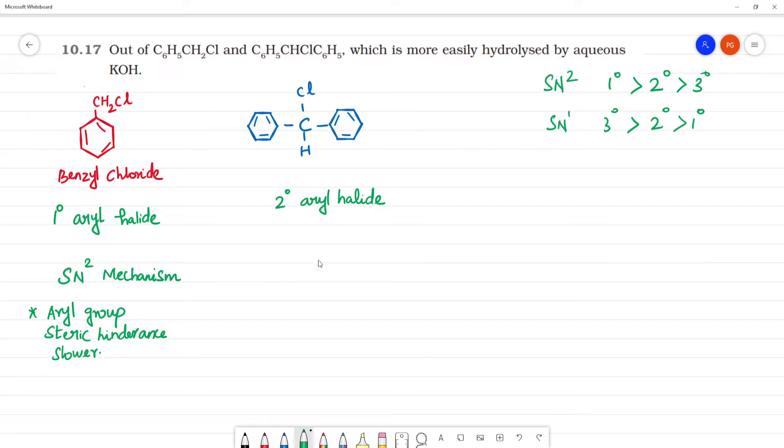In the secondary alkyl halide, this proceeds via SN1 mechanism. Because of the bigger aryl group, this proceeds via SN1, and a carbocation is formed. How is the carbocation formed? This carbocation has a positive charge.